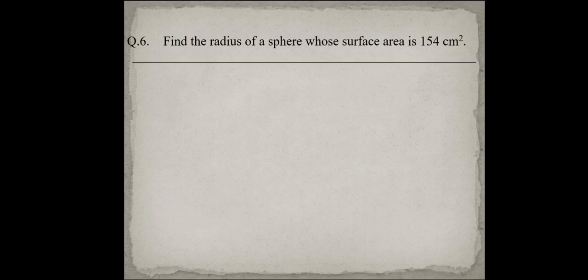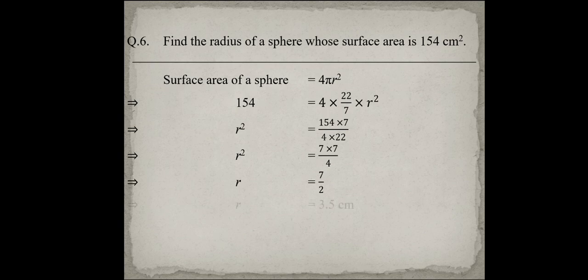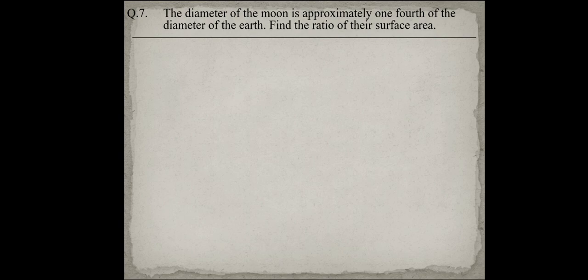In question number 6, find the radius of a sphere whose surface area is 154 cm². The formula of surface area is 4πr². So 154 = 4 into 22 upon 7 into r². Solving, r² = 154 into 7 upon 4 into 22 = 7 into 7 upon 4. The radius is the square root of this, which is 7 upon 2, so the radius is 3.5 cm.